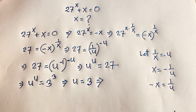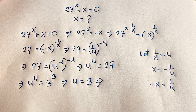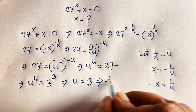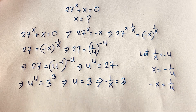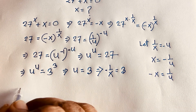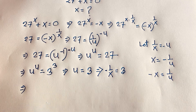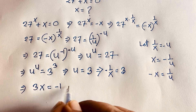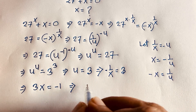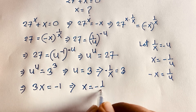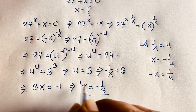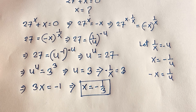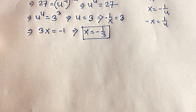Recall that u equals minus 1 over x. So minus 1 over x equals 3. Multiplying both sides gives 3x equals minus 1. Dividing both sides by 3, we find x equals minus 1 over 3. This is our final answer using the first method.